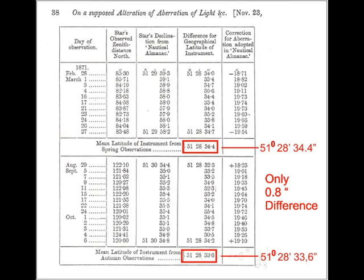In 1871, George Biddle Airy, the Astronomer Royal, performed this experiment. This is a copy from his original report. You can see that the two readings are virtually identical.